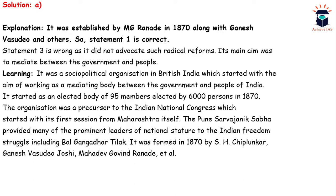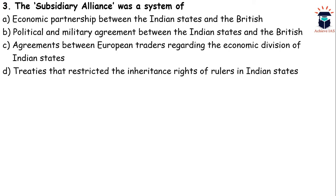The third question: Subsidiary Alliance was a system of — A) economic partnership between Indian states and the British, B) political and military agreement between Indian states and the British, C) agreements between European traders regarding economic division of Indian states, D) treaties that restricted inheritance rights of rulers. Option B is correct — Subsidiary Alliance was a political and military agreement in which princes came into agreement with the British East India Company.